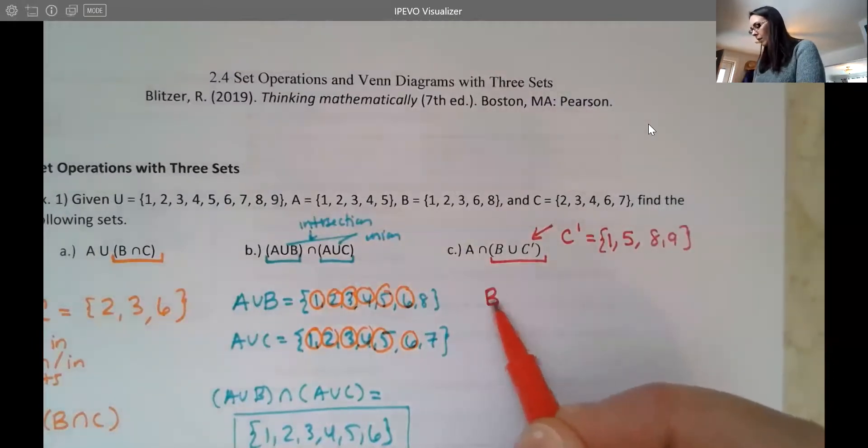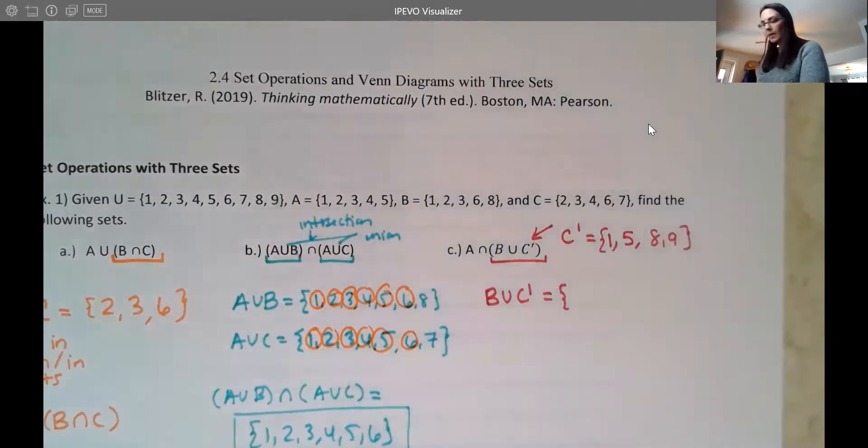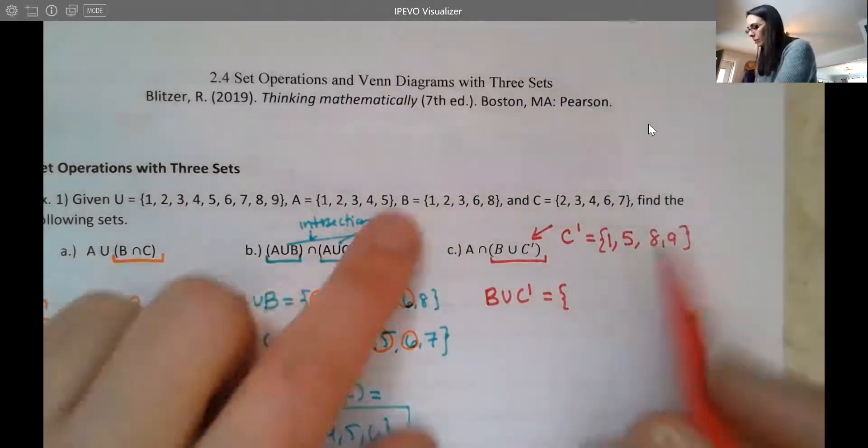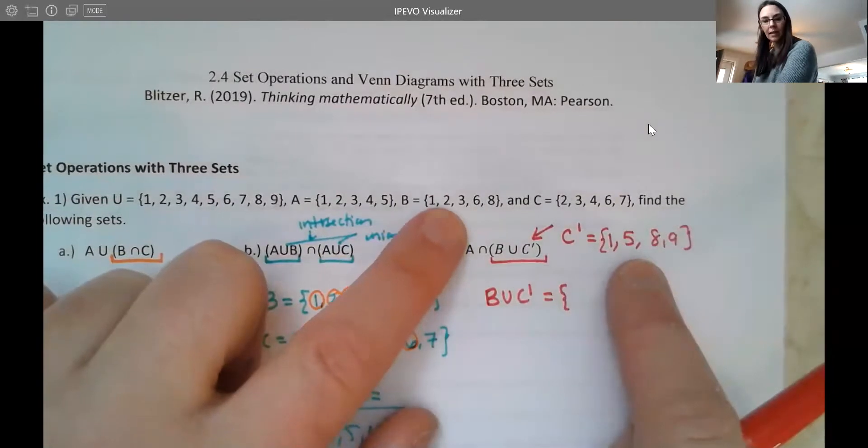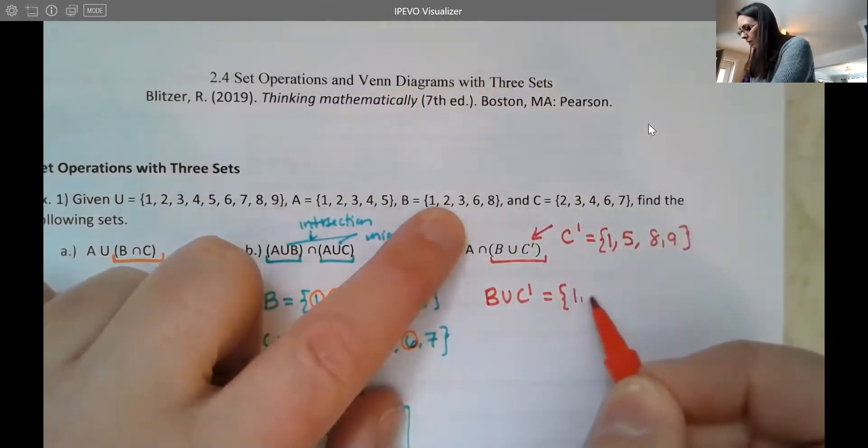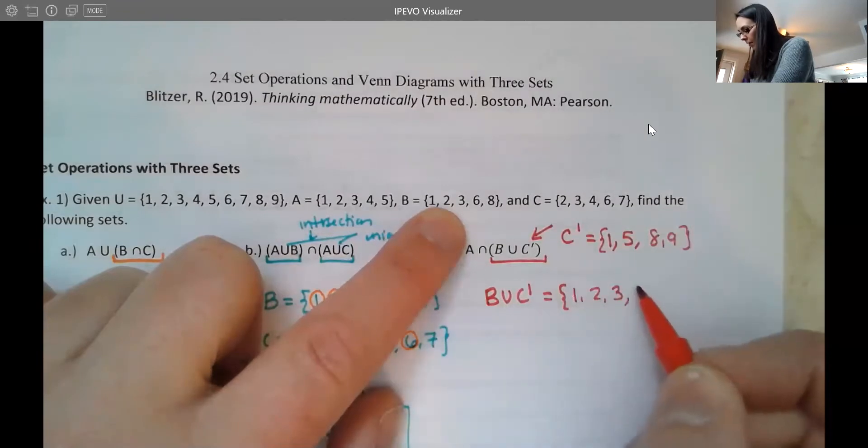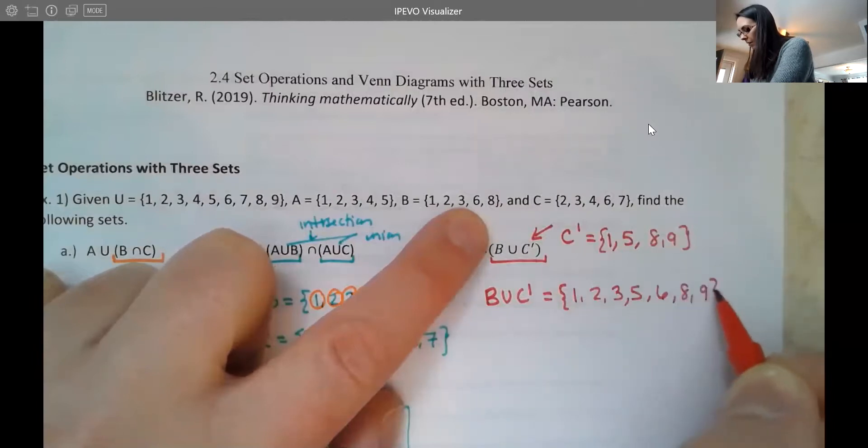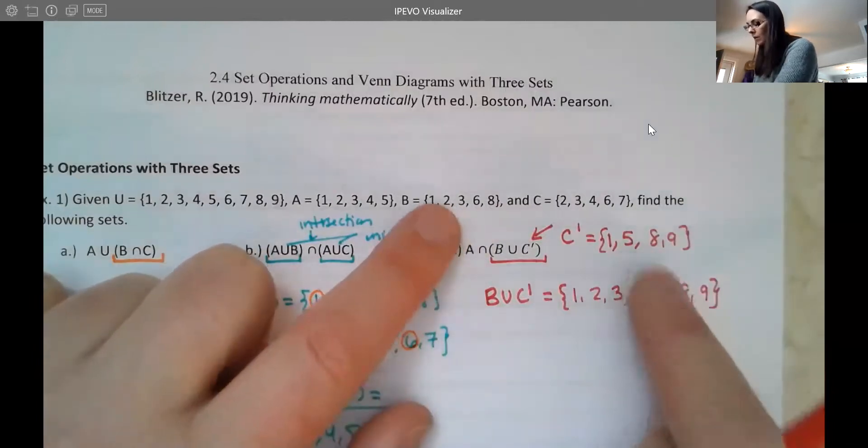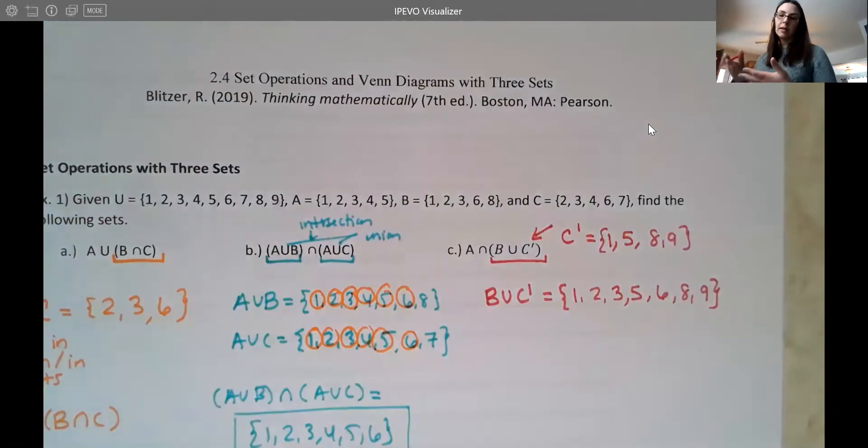Now I'm looking for B union the complement of C. So I want to unite the sets B and the complement of C. So I'm going to combine these two sets together: one, two, three. I don't see a four in either set. I have a five though. I have a six. I have an eight and I have a nine. So again, I'm just combining those two elements. You don't have to go in order. It's not incorrect to go out of order. It is that we usually do. But if you have it in a different order, it's not incorrect. We just don't like to have repeats.